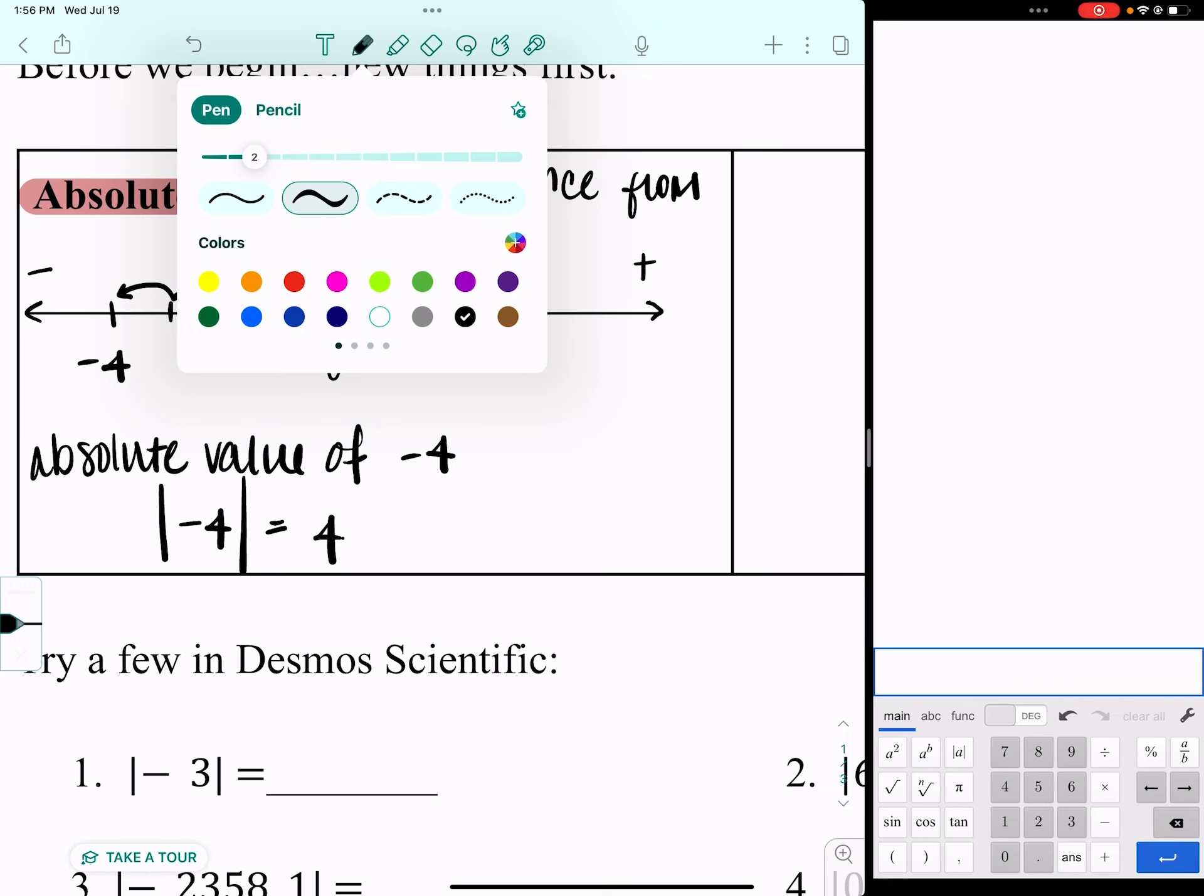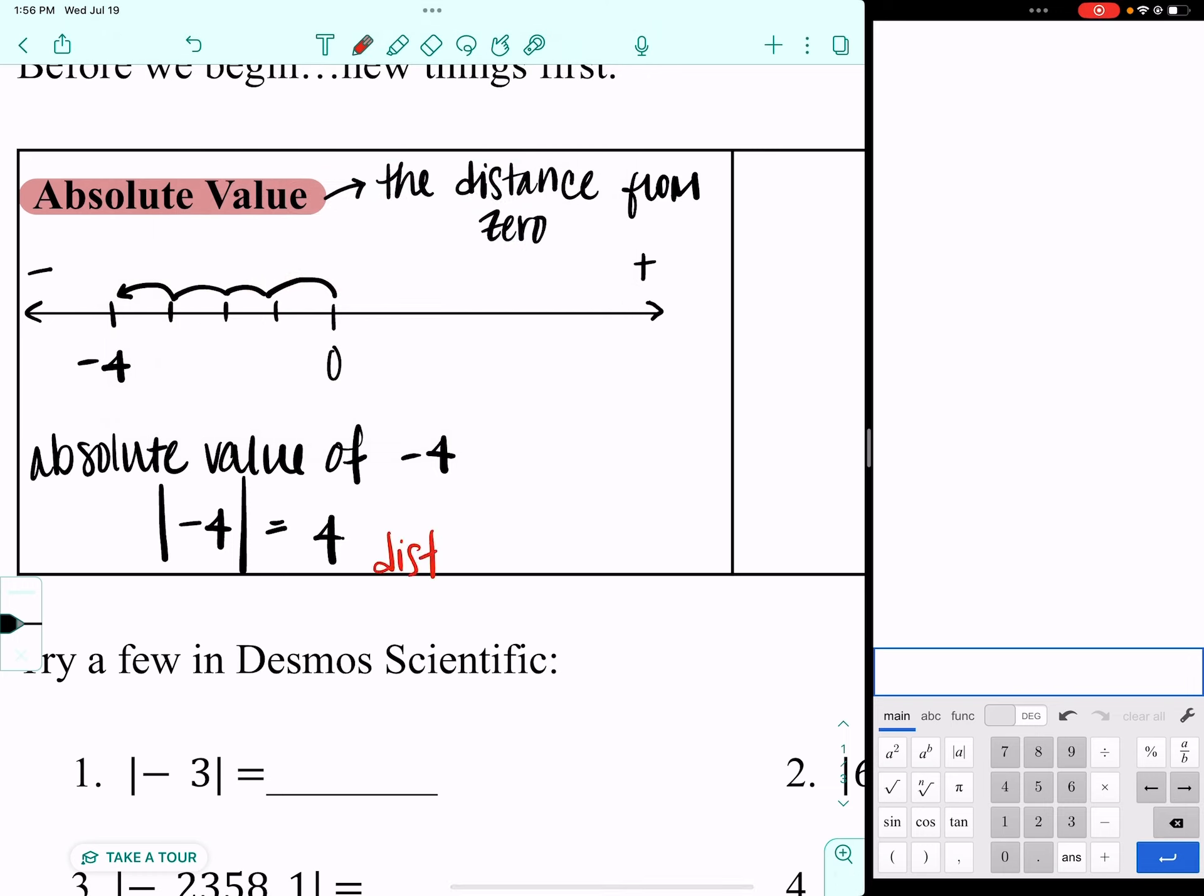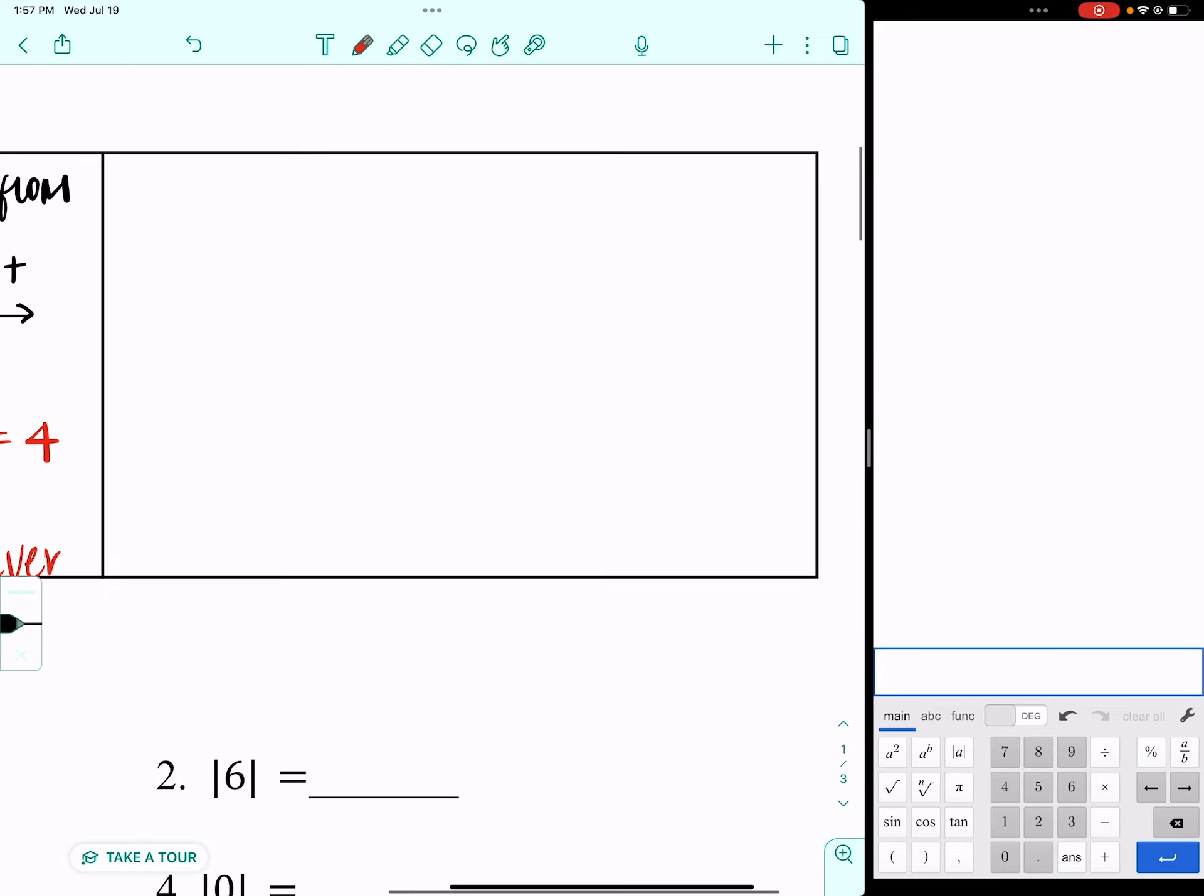Remember, distance is never negative. Yes, you can walk backwards, but that gets into direction, into math with vectors, and we're going to put that off for another time. What that also means is that if I put positive 4 over here, that's still 1, 2, 3, 4 jumps from zero. So the absolute value of positive 4 is still 4.